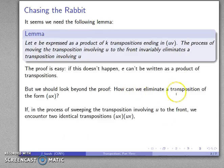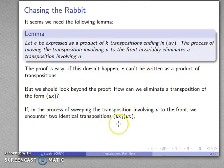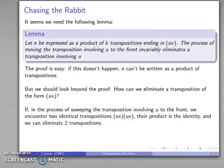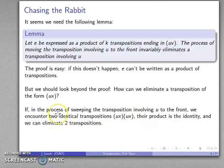That means the only way we can really eliminate a transposition of the form ux is that somewhere along the way we have to encounter two identical transpositions — ux followed by ux. And if we do encounter those, their product is the identity, and we can eliminate both of them at the same time. That means this product of k transpositions, in order to express the identity, has to include somewhere along the way a transposition multiplied by itself.